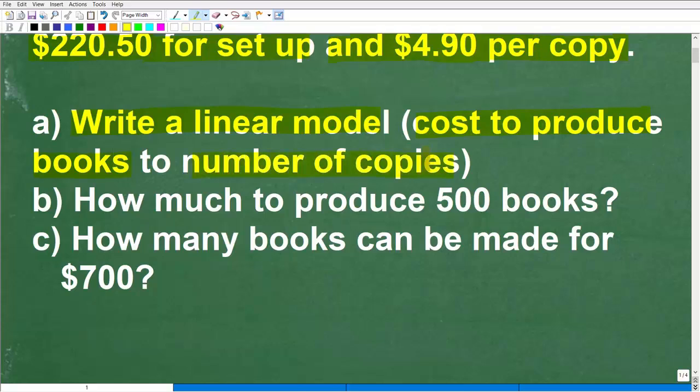The first thing we want to do is construct or write a linear model that relates the cost to produce books, the total cost to produce books, to the number of copies you want to make. For example, if you wanted to make 75 copies, how much would that cost?